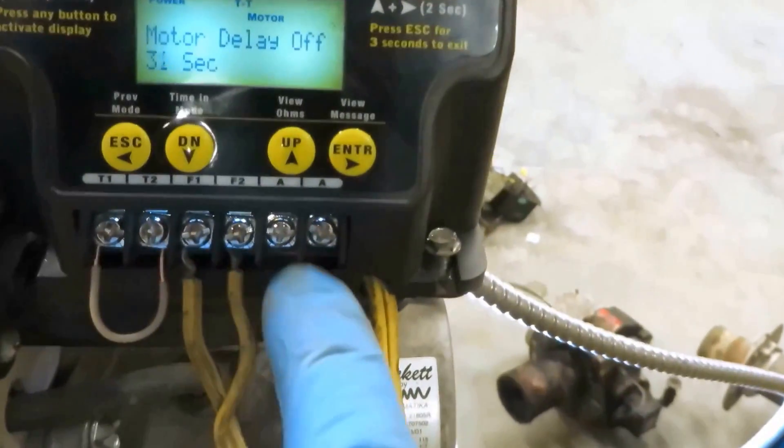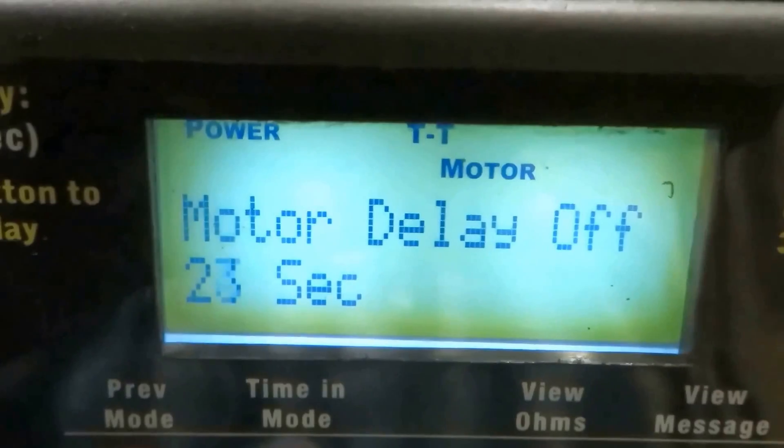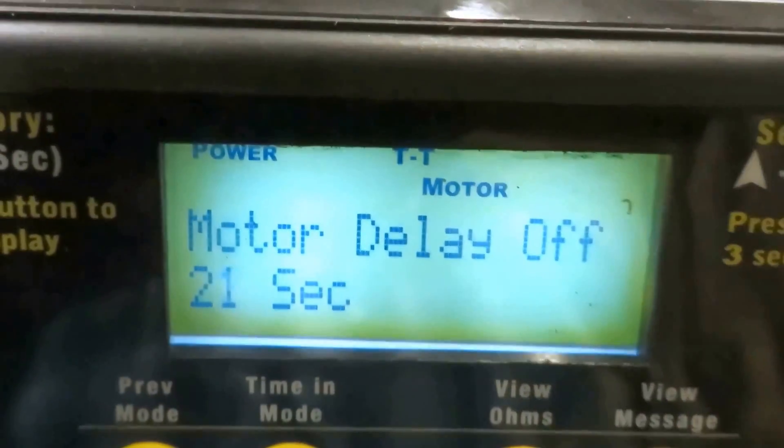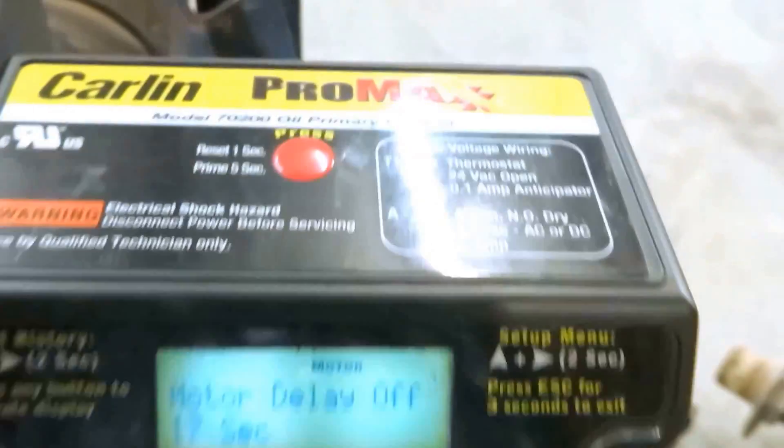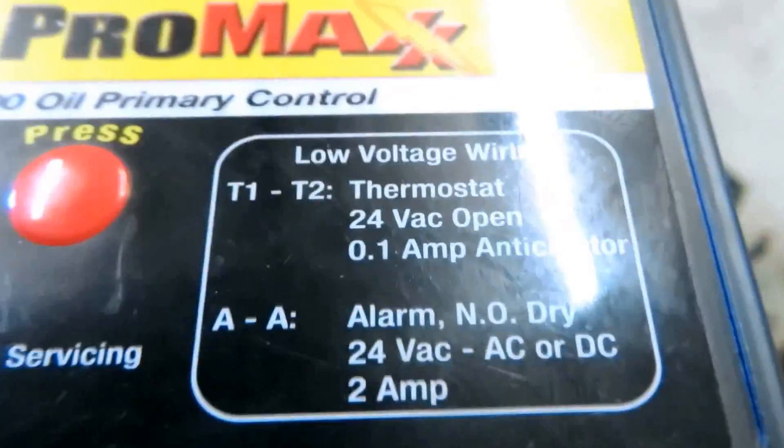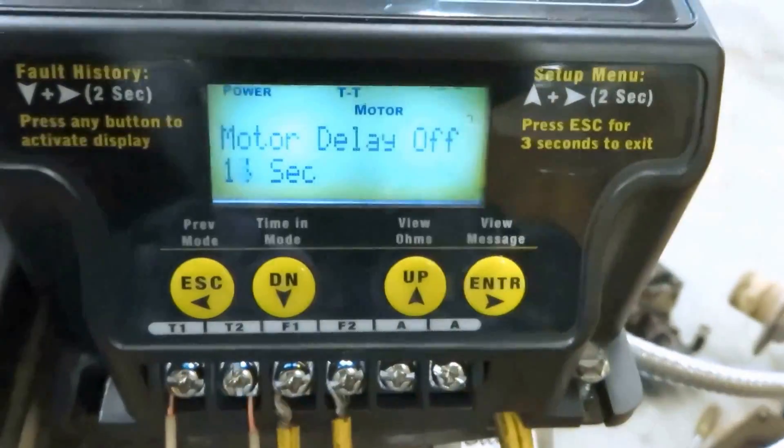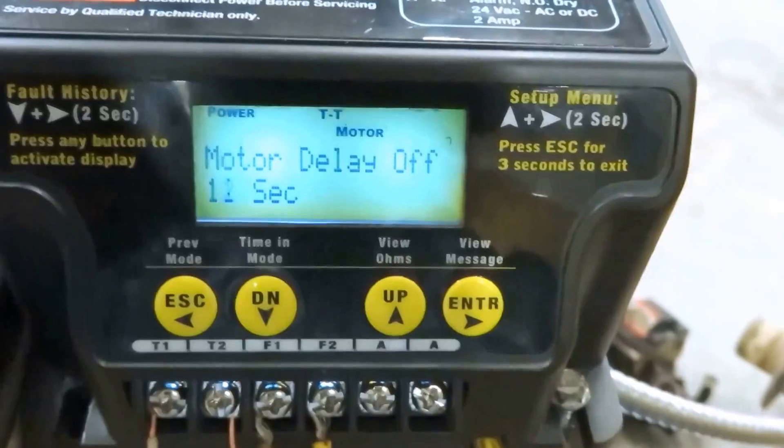We got an AA here for an alarm. If you want to hook up an alarm to it, if this thing ever tripped out on safety, you can hook that up to your alarm and alert the alarm company that you got no heat. This one is the Carlin Pro Max. Post-purge mode.